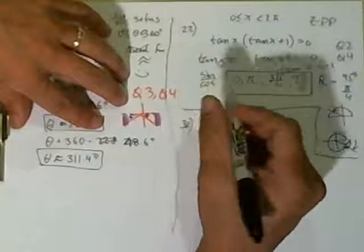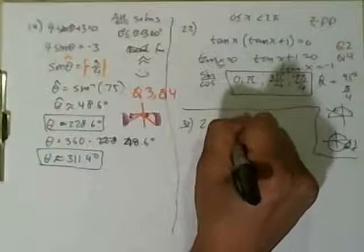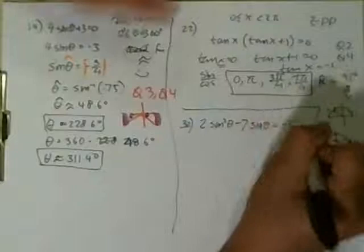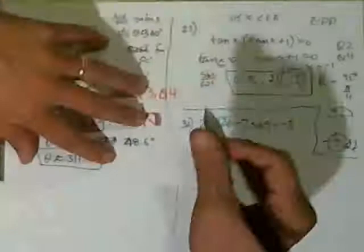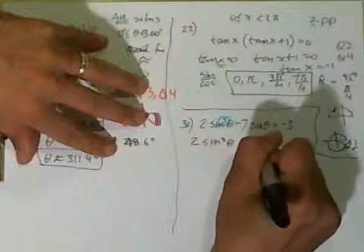Problem 32: 2 sin²θ - 7 sinθ = -3. Well, now we know something. It's quadratic in nature. So we have to set it equal to 0. We're going to add 3 over. 2 sin²θ - 7 sinθ + 3 = 0. Is it factorable?